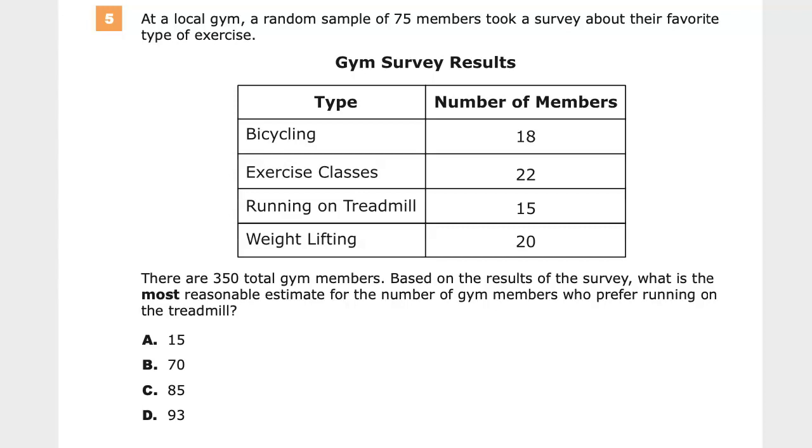At a local gym, a random sample of 75 members took a survey about their favorite type of exercise. So they used a sampling method where they just picked a small number of people instead of picking all of them. It's very common.